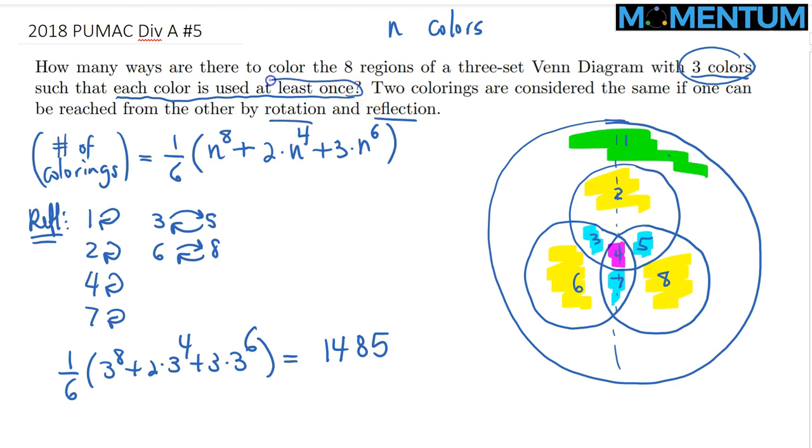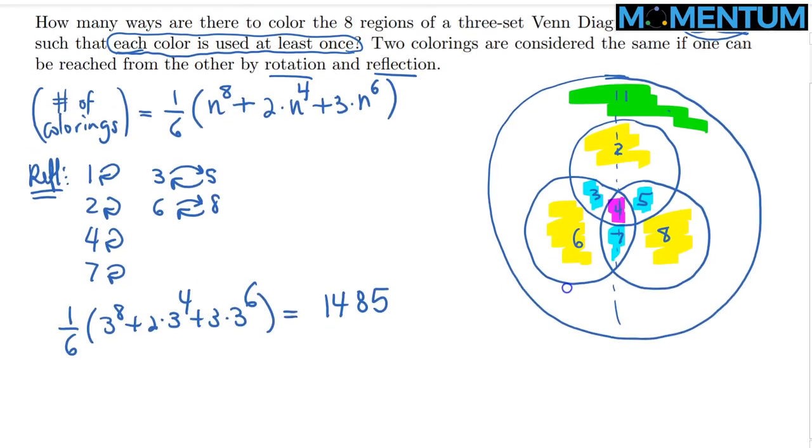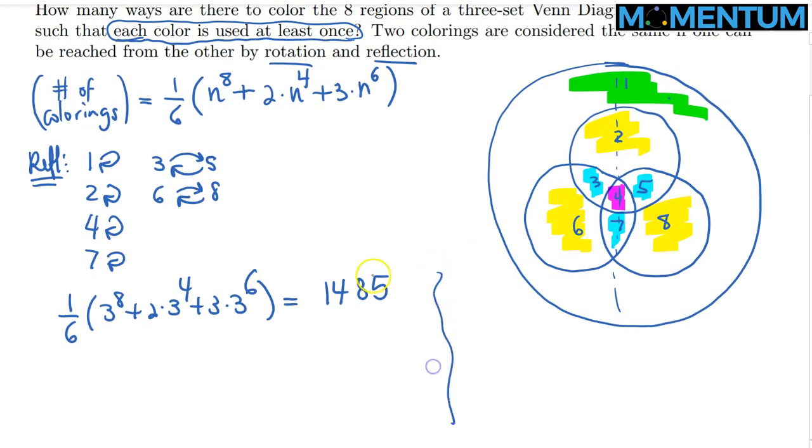Because of this condition here that forces us to make sure that each color is used at least once. And well, these 1485 colorings, some of them might have only two colors, for instance. So, we need to make sure that these are ruled out. So, how many ways can we color these using only two colors? So, I need to make an adjustment, right? So, this is basically a strategic overcount. And in the spirit of principle of inclusion and exclusion, I want to make my adjustment. So, I want to make an adjustment in such a way that, for instance, what if we used only two colors?